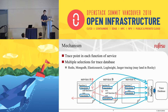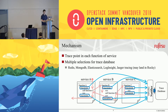You can specify either Redis, MongoDB, Elasticsearch, Loginsight, or Jaeger tracing as the trace database. The OS Profiler team is working on Jaeger Trace right now, which is an OpenTrace-compatible tracer being developed under the Cloud Native Computing Foundation. Jaeger will likely be supported as the trace database in Rocky.